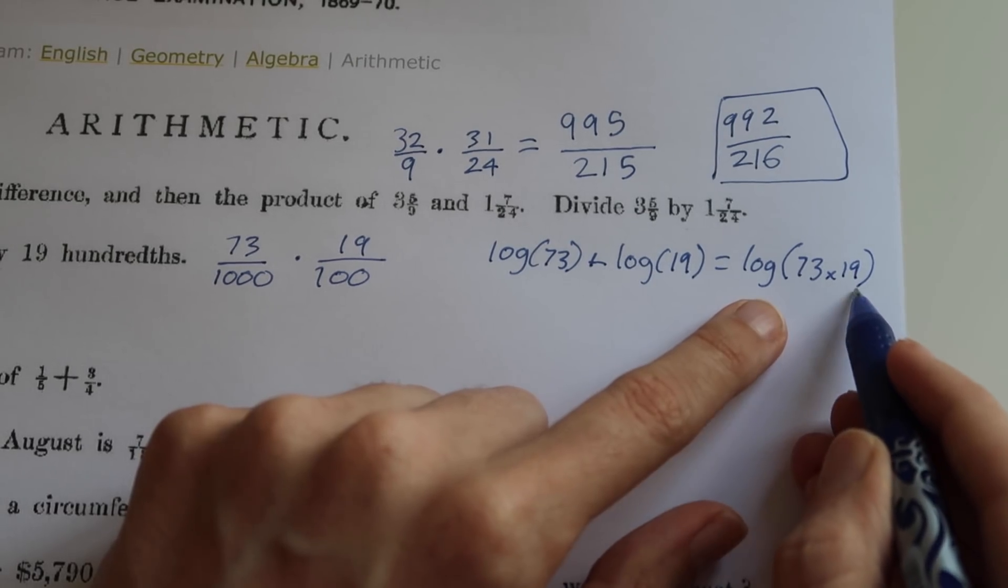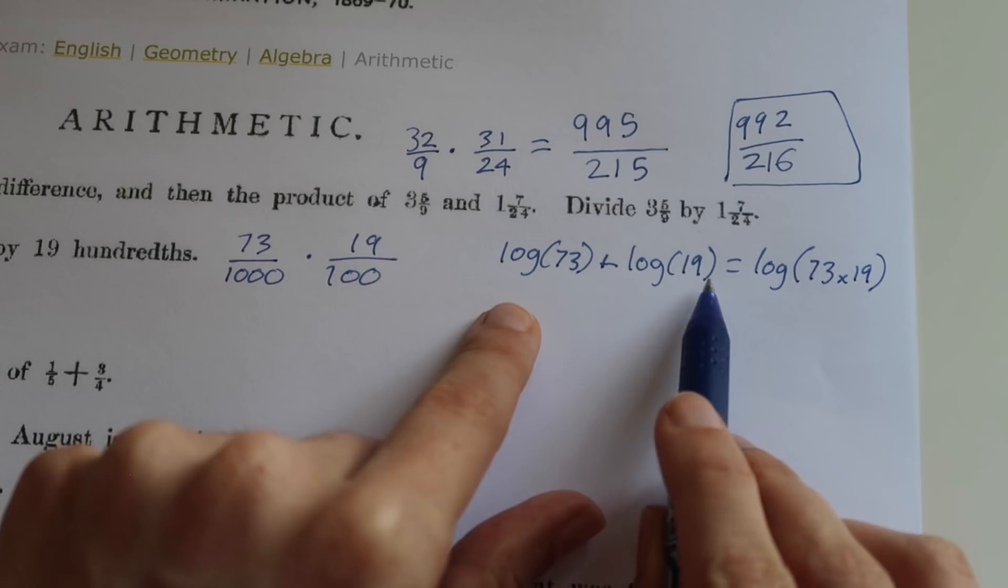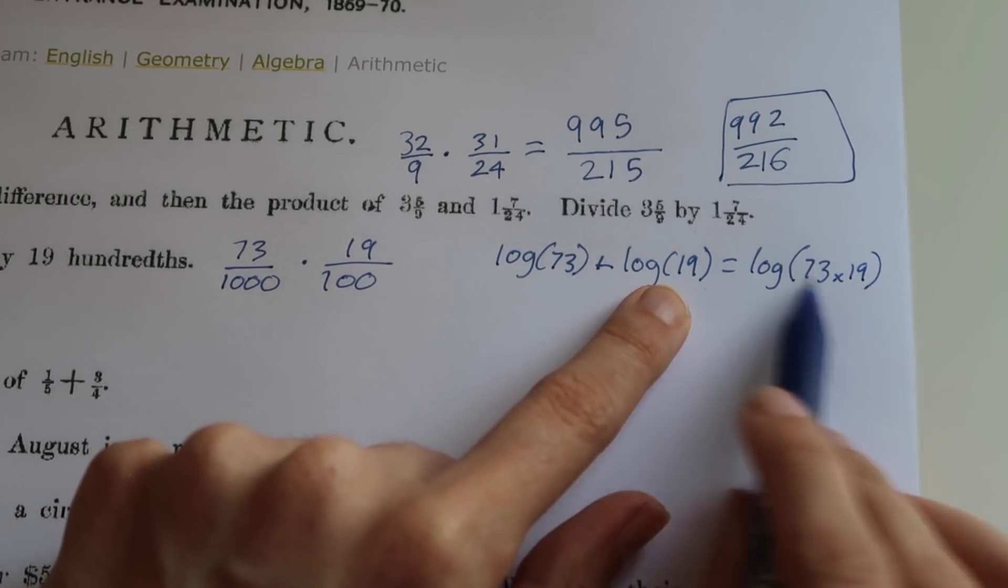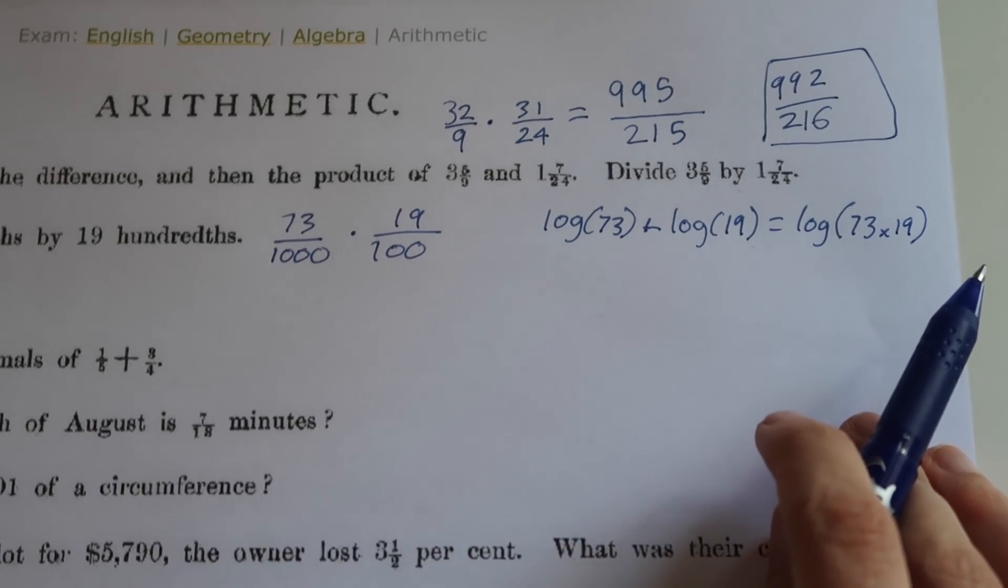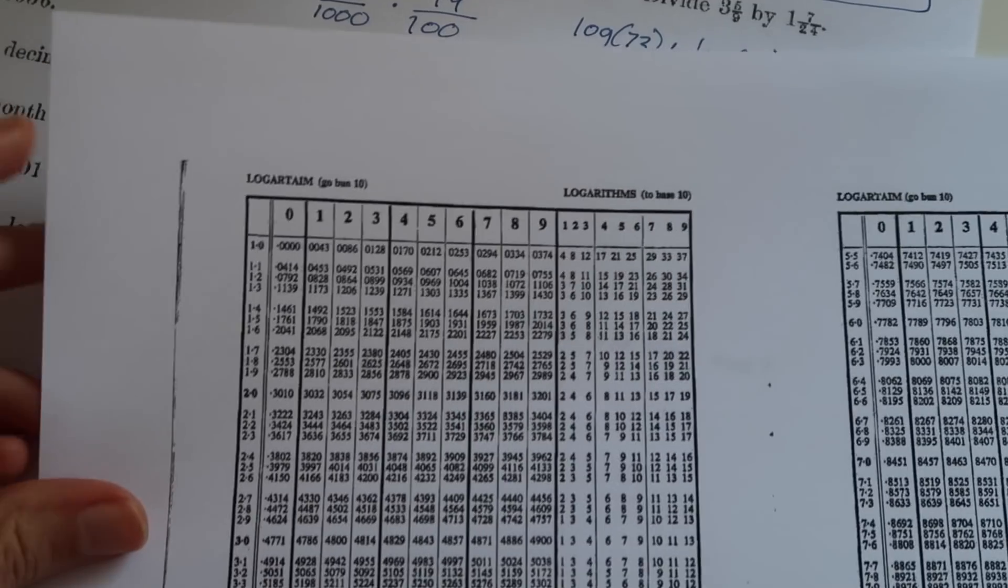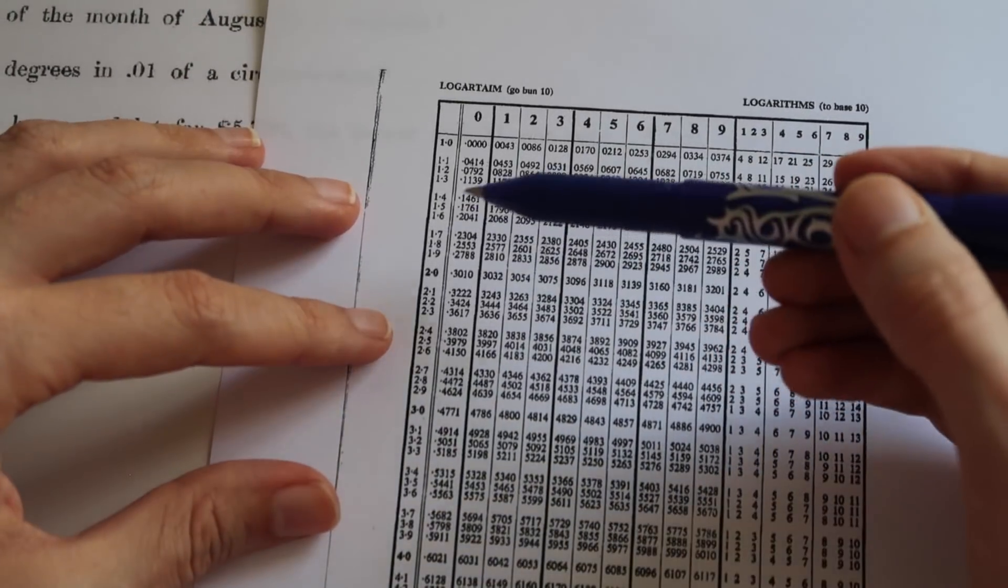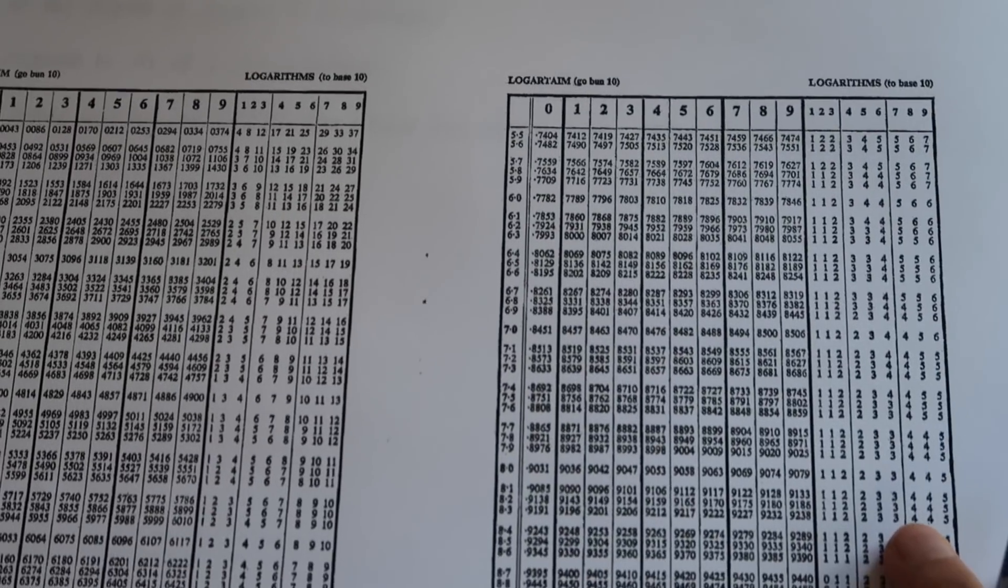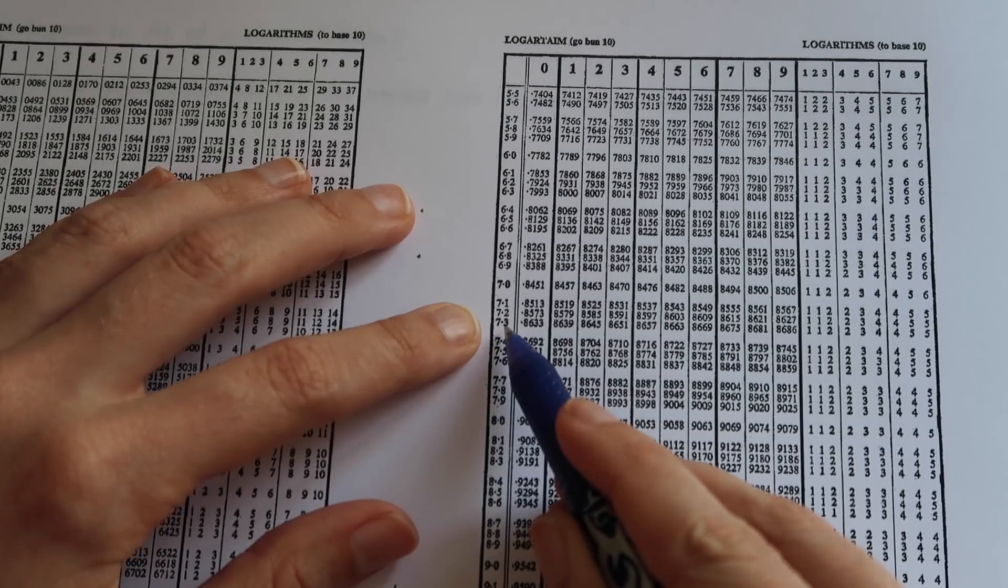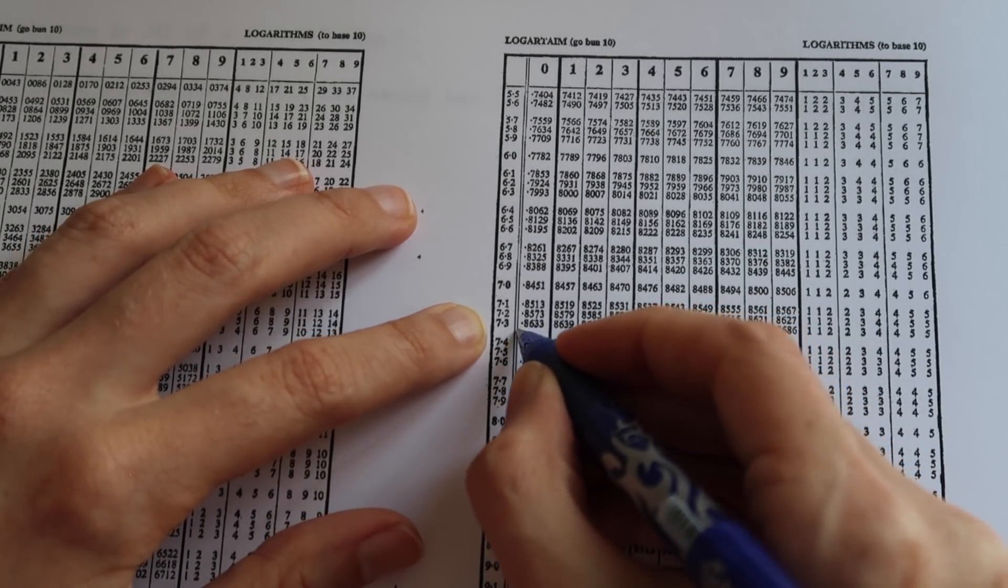The log of 73 plus the log of 19 will give us the log of the product 73 times 19. So if we wanted to find this product here, 73 times 19, then all we need to do is add the logs together and then take the antilog of the answer. So let's try and do that. We're going to look up in our log table what the log of 73 is. Now in a similar way, these numbers are all less than 10, so let's have a look for 7.3.